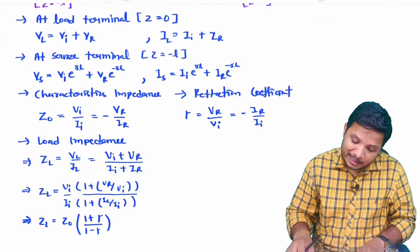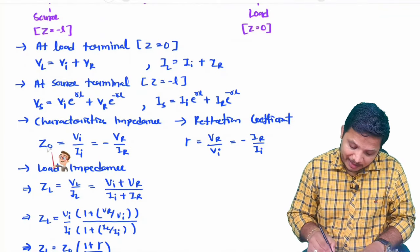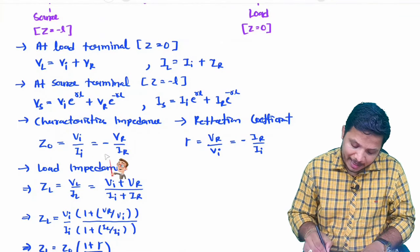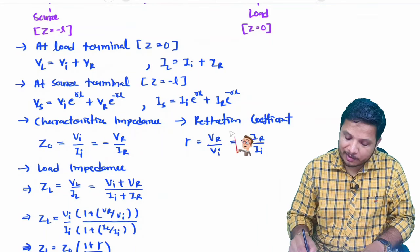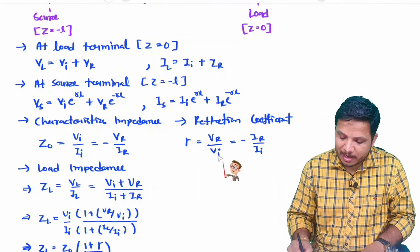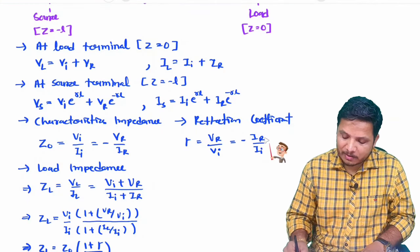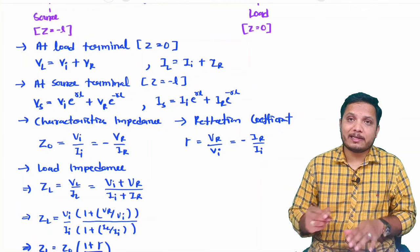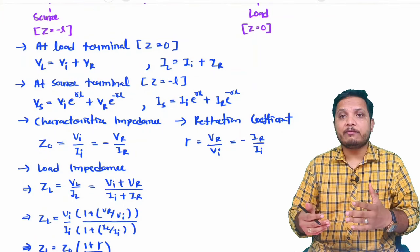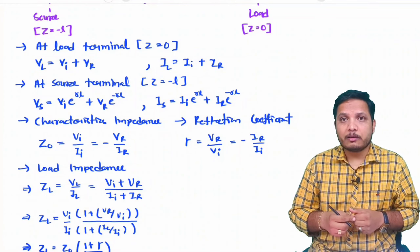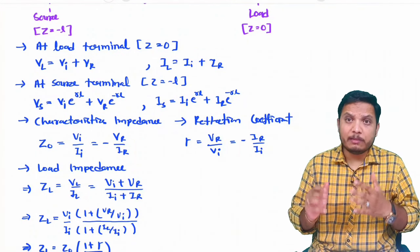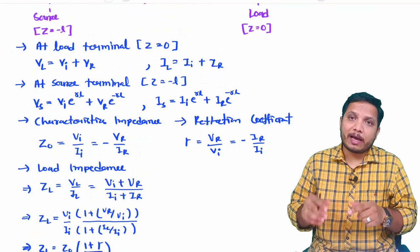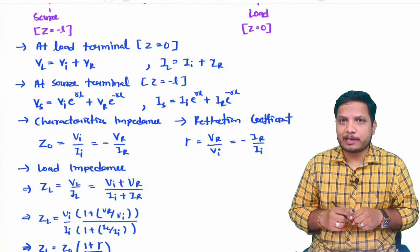To summarize: characteristic impedance is Z0 = Vi/Ii = −Vr/Ir, and reflection coefficient ρ = Vr/Vi = −Ir/Ii. These will be used in further derivations. In the next video, I will explain how to calculate input impedance using all these formulas.